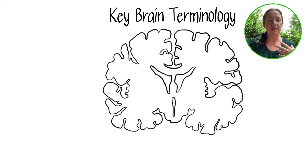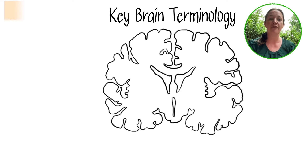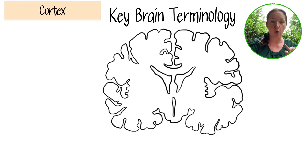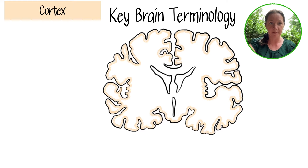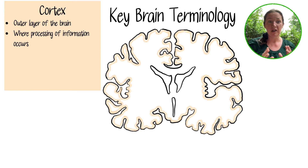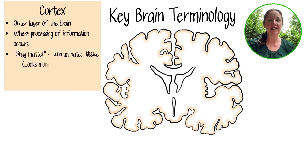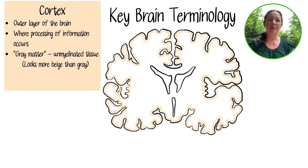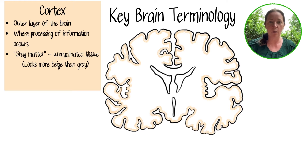Before we talk about all the different parts of the lobes and their general jobs, I need to go over some key brain terminology. The first is the word cortex. When you hear me say cortex, I'm talking about the outer layer of the brain where processing of information occurs. It's only about two and a half millimeters thick in most people. This is where the neuronal cell bodies do all of the thinking. It's called gray matter — unmyelinated tissue, meaning it doesn't have fat wrapped around it to insulate it. Though in dissections, even in cadavers, it looks more beige than gray.